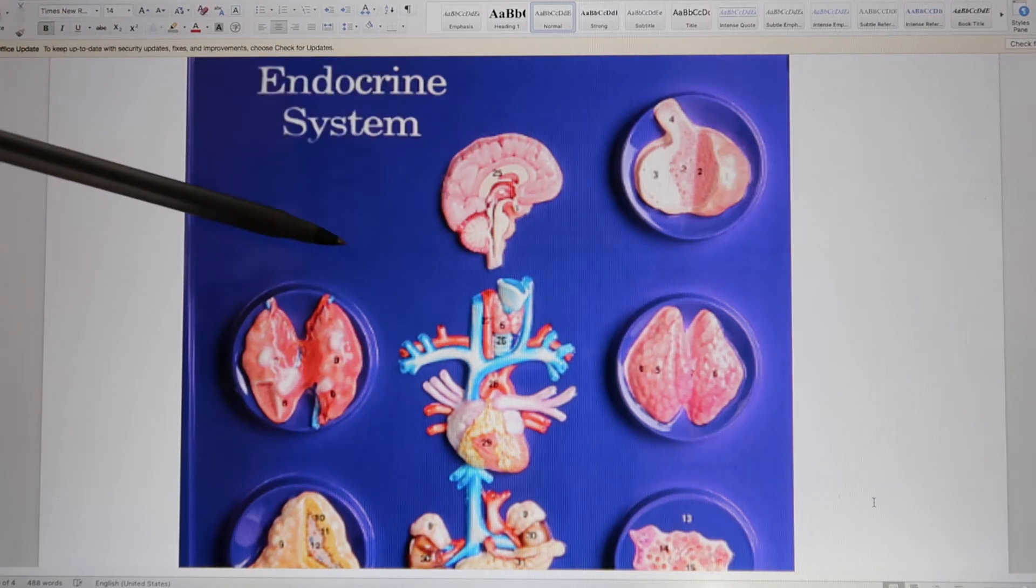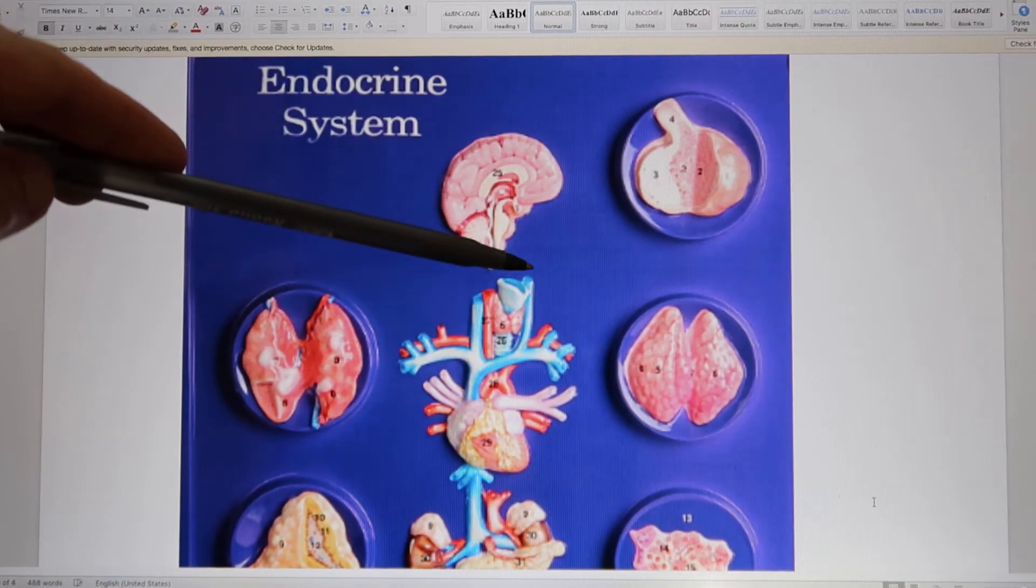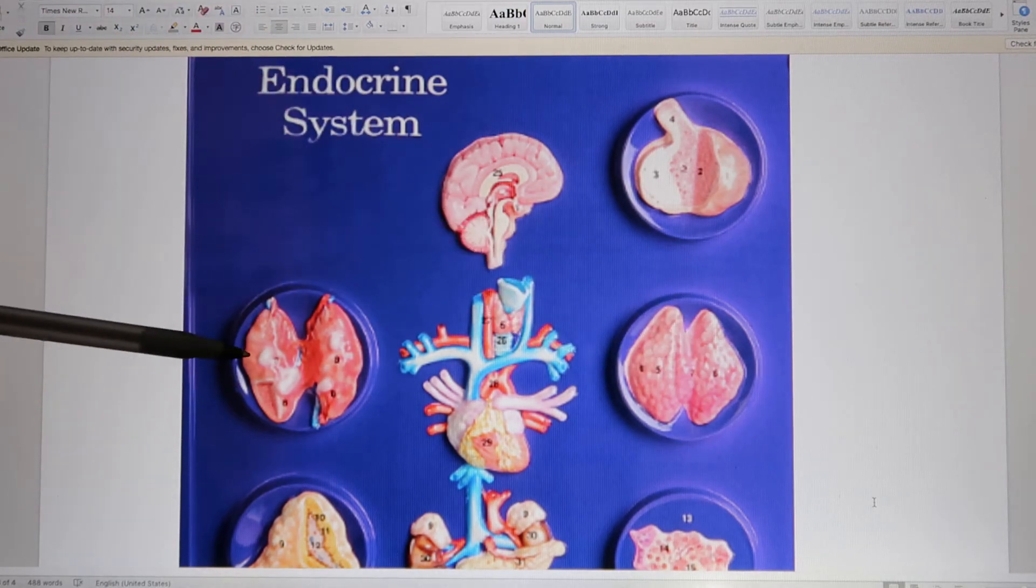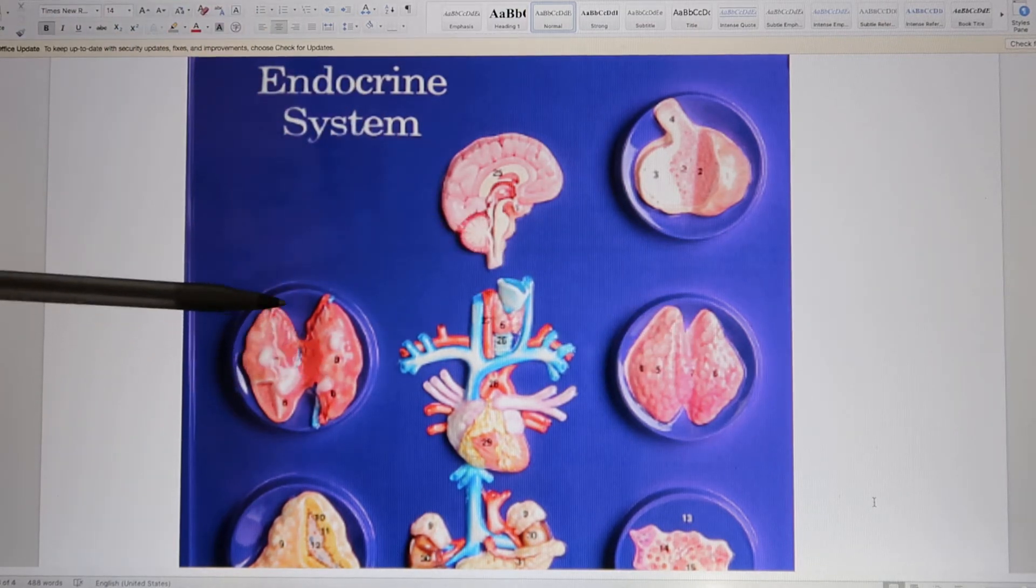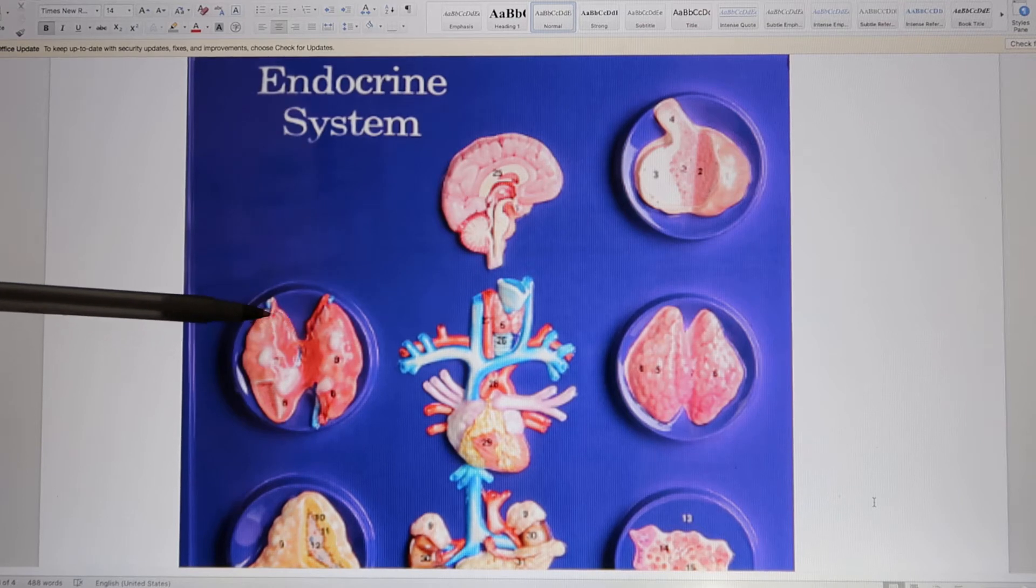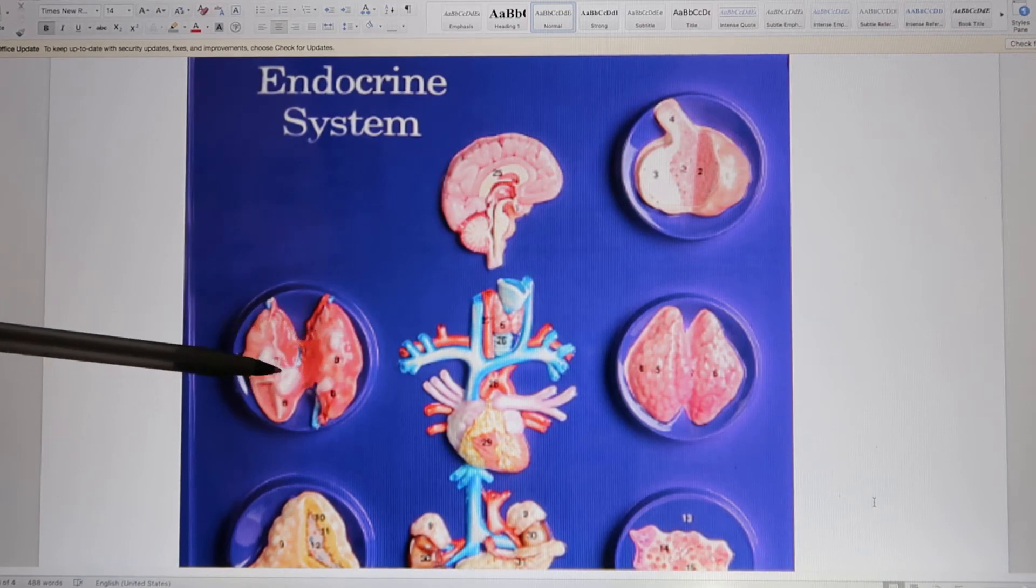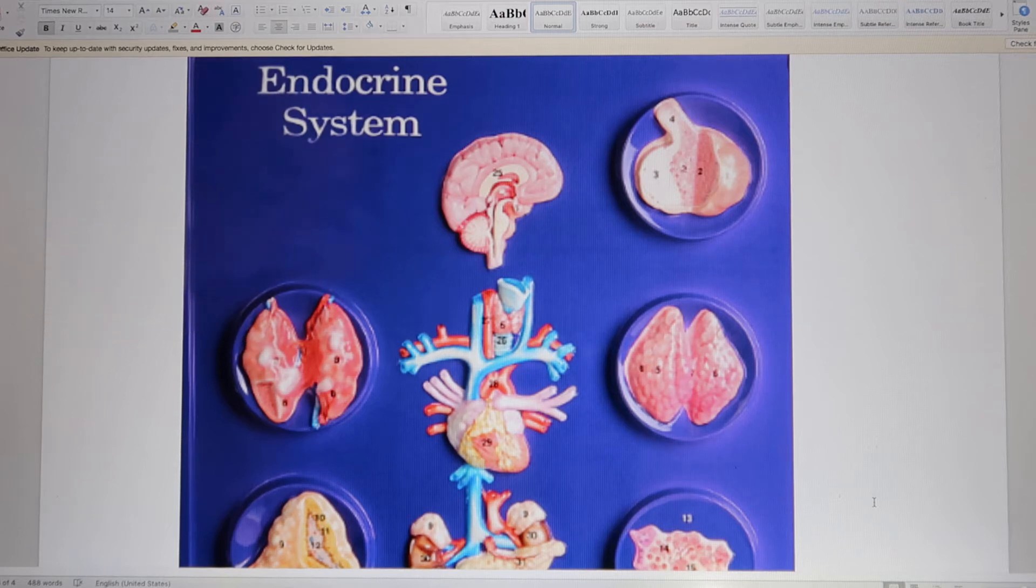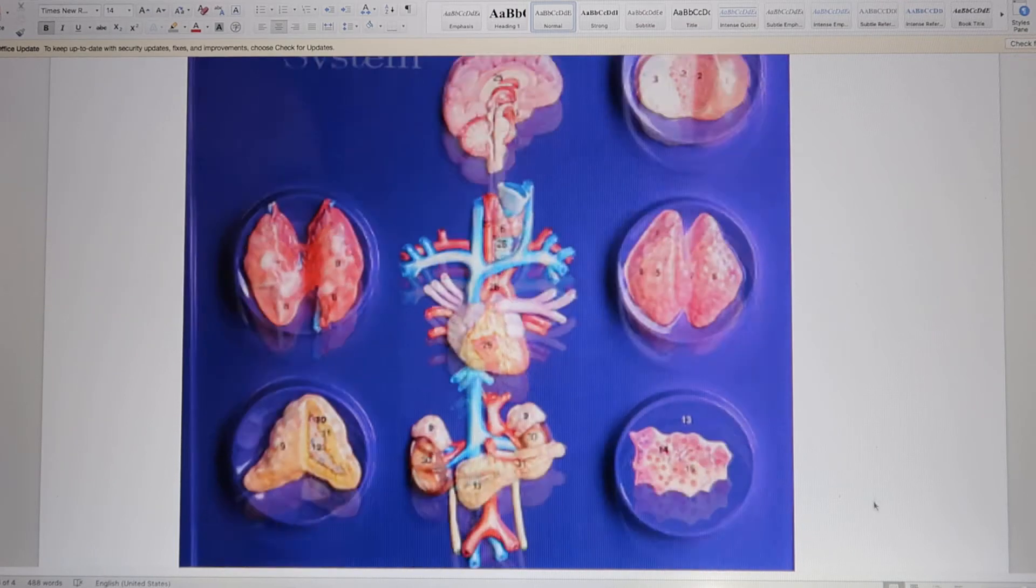And go to the thyroid gland. This is the thyroid gland. And this is the posterior view. In the posterior view of the thyroid, you see the four small dots. These four are parathyroid gland. So if I point at this one, ask you what's this endocrine organ? Your answer is parathyroid gland, not the thyroid gland.